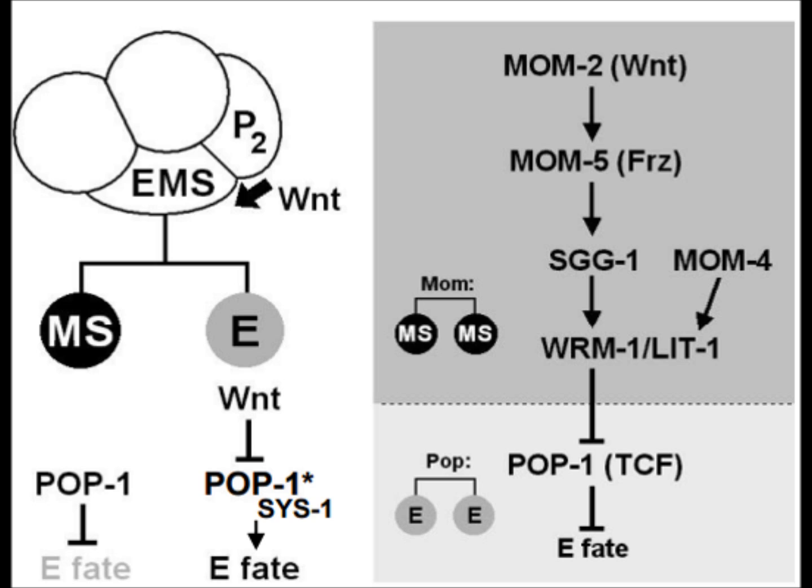As you can see here, Wnt signaling is actually present from P2 to the posterior side of EMS. Looking at the flow chart on the right, MOM2, which is Wnt ligand, and MOM5, which is the Frizzled receptor, are both part of the general Wnt pathway shown previously and we see their names from their mutant phenotypes.